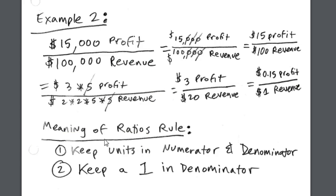This is the meaning of ratios rule: always keep the units in the numerator and denominator, and keep a 1 in the denominator. You can always figure out what the ratio means. In business, accounting, and finance, there are hundreds of different possible ratios that help us figure out information about the business — like this profitability ratio: for every $1 that comes in, how many pennies do the owners get to keep?